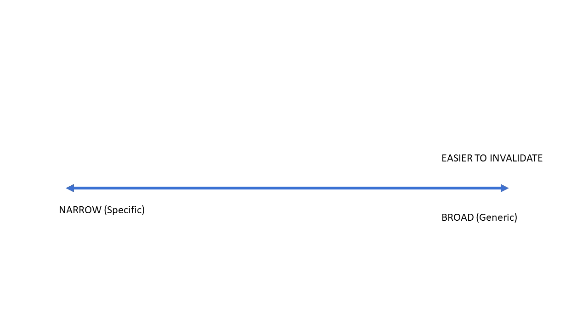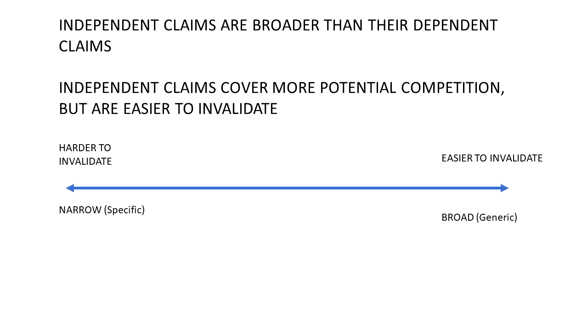For an issued patent, it could be a competitor that you are trying to sue for infringement, and that competitor may do a similar thing, additional searching in an attempt to invalidate a claim. It is a common strategy in patent litigation. Narrow claims are harder to invalidate with prior art, because you have to find something more specific in order to do so. So they usually have a better chance of getting allowed to become part of an issued patent, and are also harder to invalidate in this way during patent litigation. So to summarize, independent claims are broader than their dependent claims, and independent claims cover more potential competition, but are easier to invalidate.